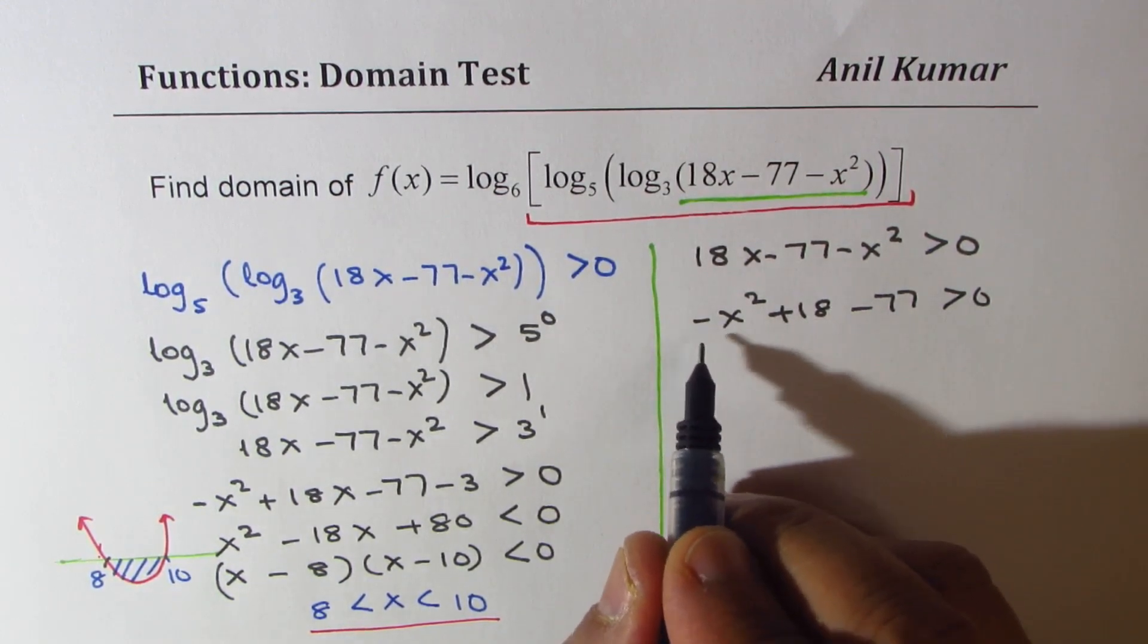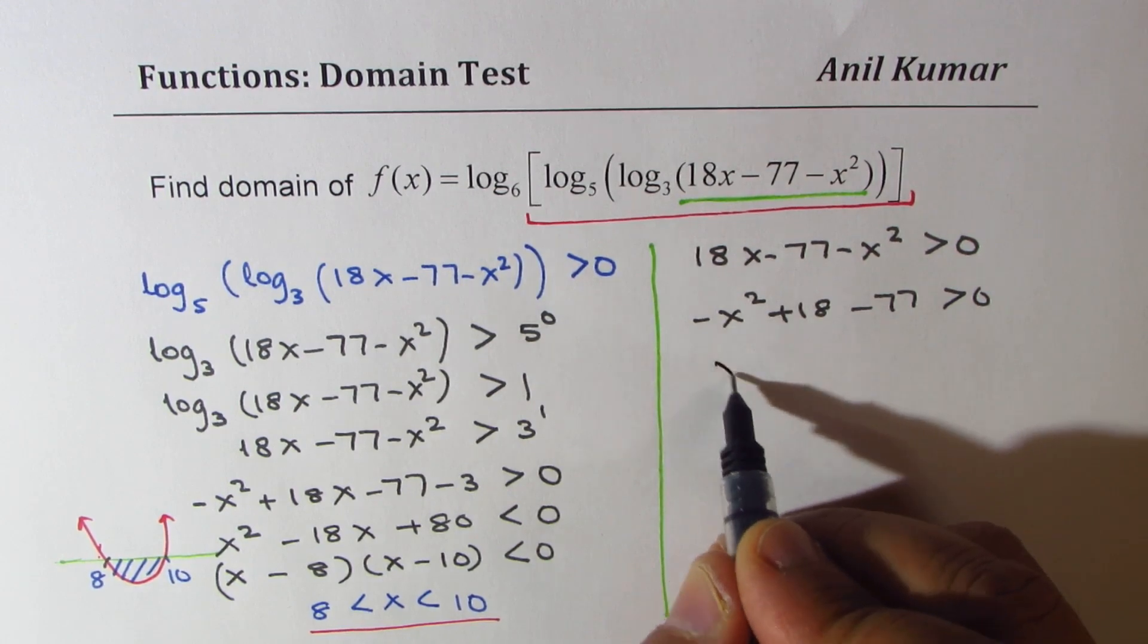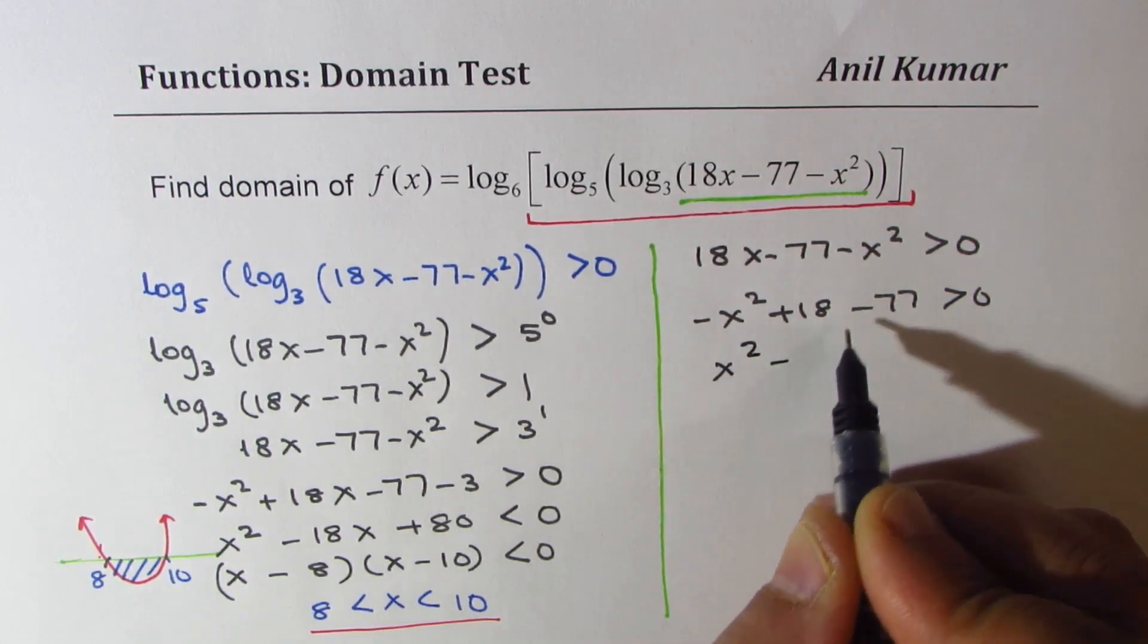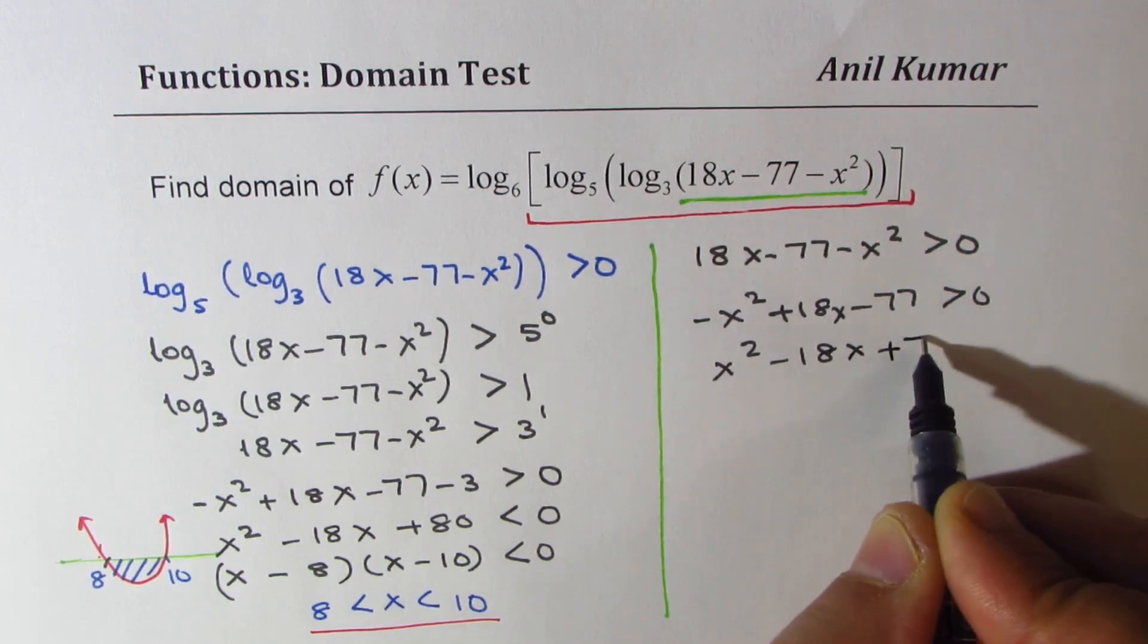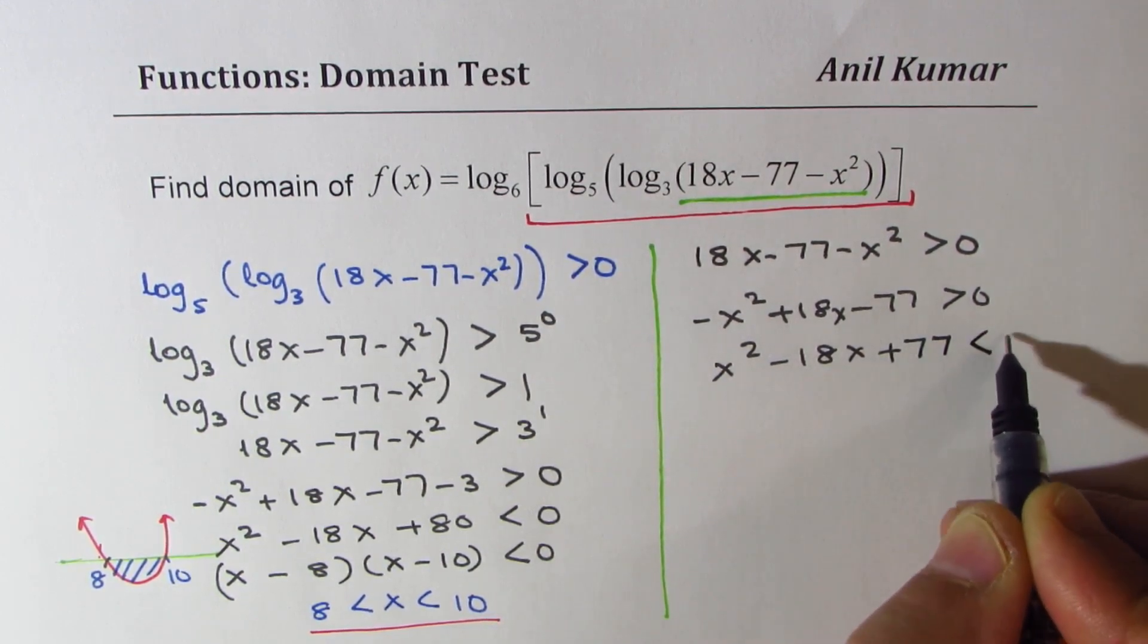Make it negative that means multiply both sides by negative. So we get x squared minus 18x plus 77 is less than 0.